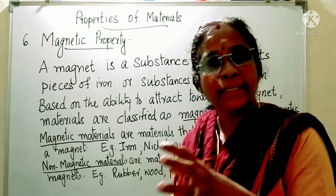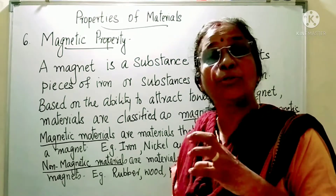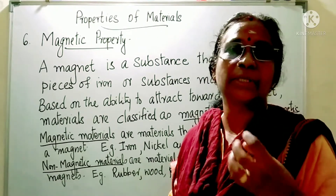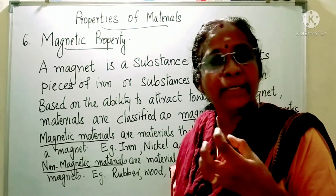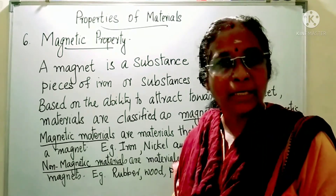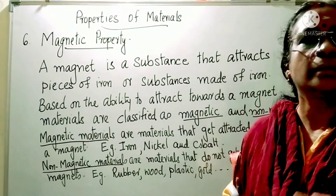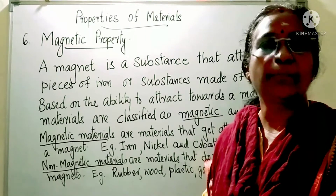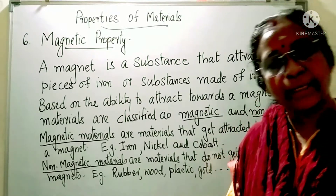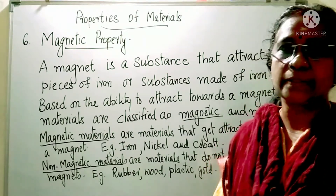Magnetic substances get attracted towards the magnet. Objects made up of iron, nickel, or cobalt get attracted towards the magnet. Materials made up of glass, rubber, or plastic do not get attracted towards the magnet, so they are called non-magnetic materials.